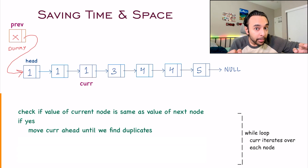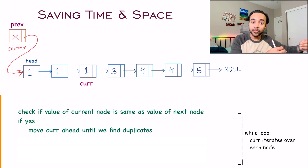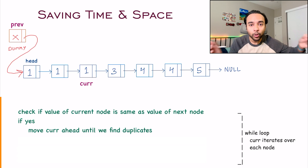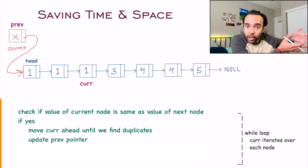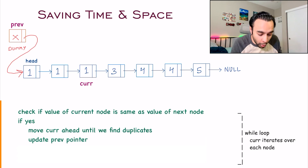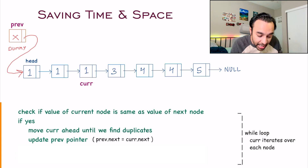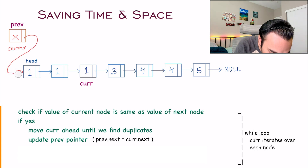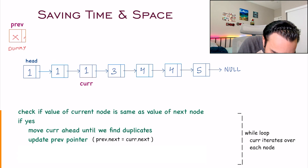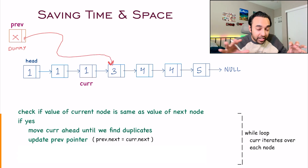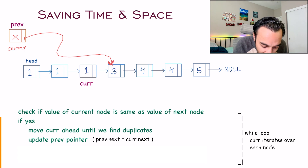So it is now time to update your previous pointer, because all of these nodes have to go away. What I will do is say previous.next equals to current.next — basically, I am removing this reference. I am saying previous.next equals to current.next, and I have just removed all of these duplicates. Now I can move my current pointer one step ahead again.